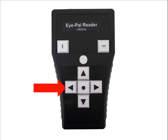To the right of the Pause Resume button is the Right Arrow button. It is marked with an arrow pointing right. This button is used to read the next word.